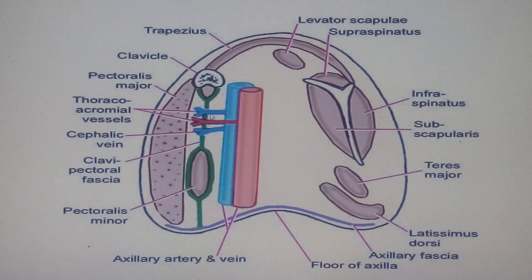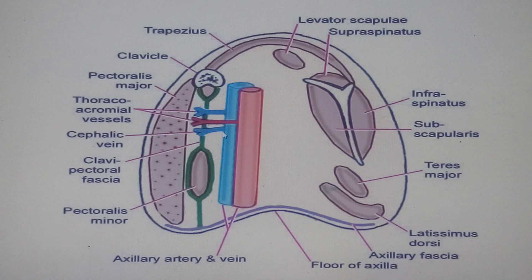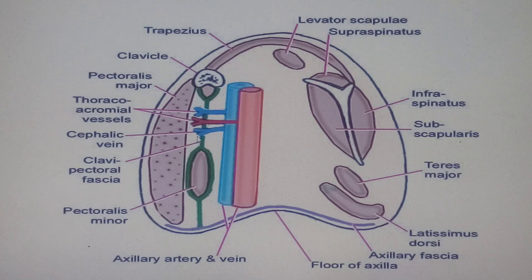Alongside the thoraco-acromial artery, the thoraco-acromial vein is also present, but more importantly there is another vein also piercing this fascia. This vein is draining from outside and has to pierce the fascia to come inside and drain. That vein is the cephalic vein — it pierces the clavipectoral fascia to drain into the deeper vessels.